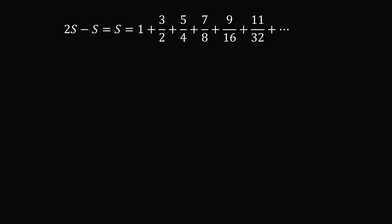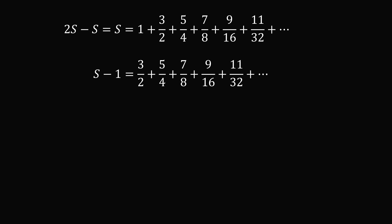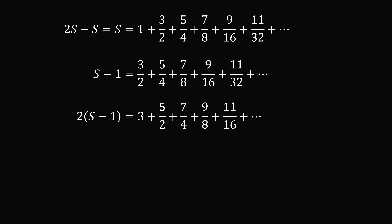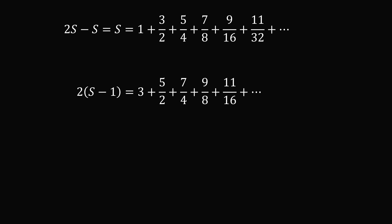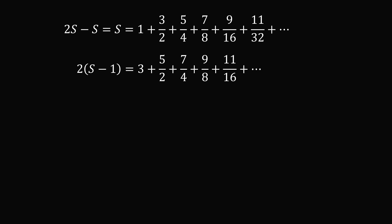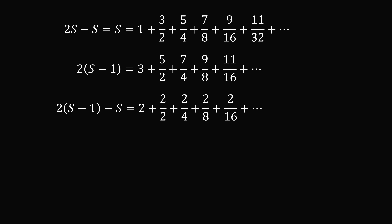Now we will subtract 1 from this series, and then again we will multiply by 2. We will take this series and subtract the one right above it. So we have 2(S−1) minus S is equal to 2, plus 2/2, plus 2/4, plus 2/8, and so on. So this simplifies to S minus 2 is equal to 2 plus 1 plus 1/2, plus 1/4, plus 1/8, and so on.